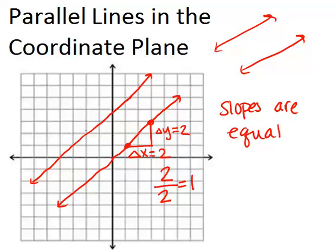If we look at the other line, it's the same thing. If we take two points, delta x equals 2 and delta y also equals 2. 2 over 2, again, is just 1. So parallel lines will always have the same slope.